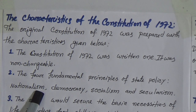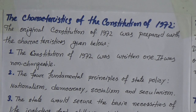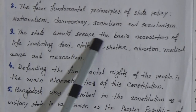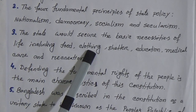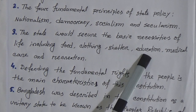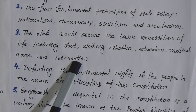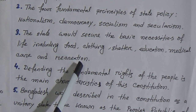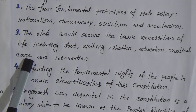The four fundamental principles are: number one, nationalism; number two, democracy; number three, socialism; and number four, secularism. These four principles are the principles of our state. Number three, the state would secure the basic necessities of life including food, clothing, shelter, education, medical care, and recreation — six basic needs and necessities written in the Constitution.